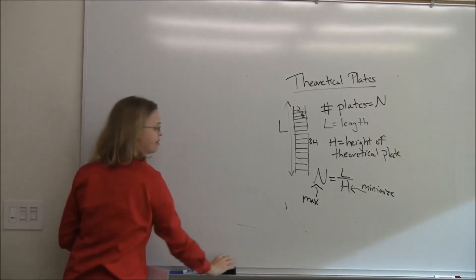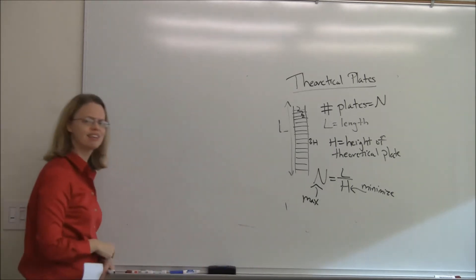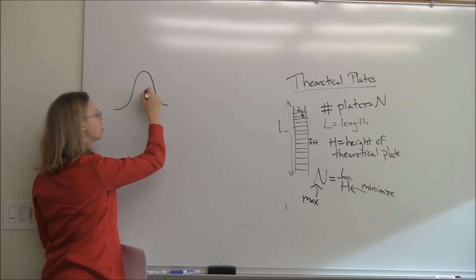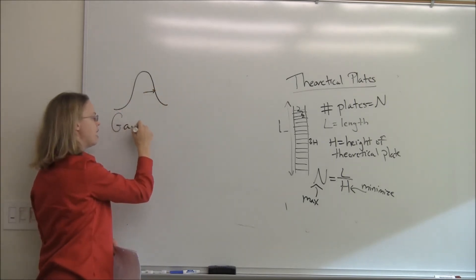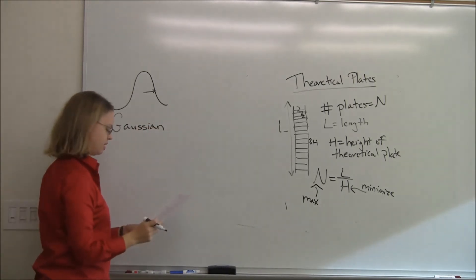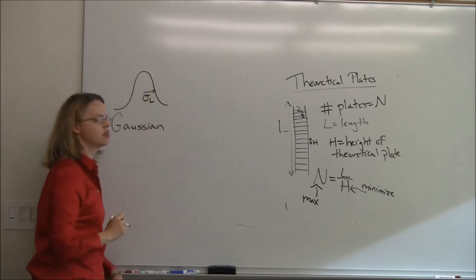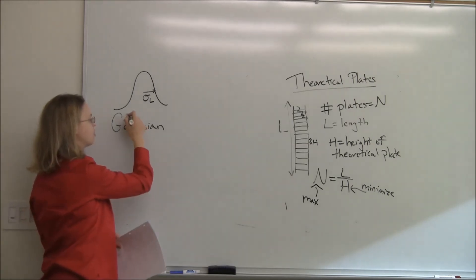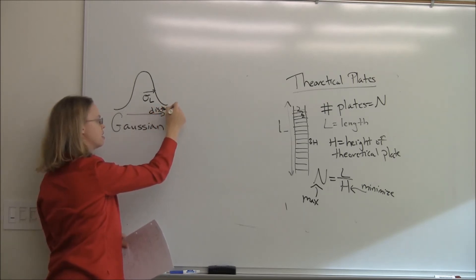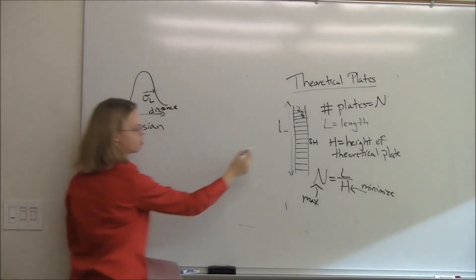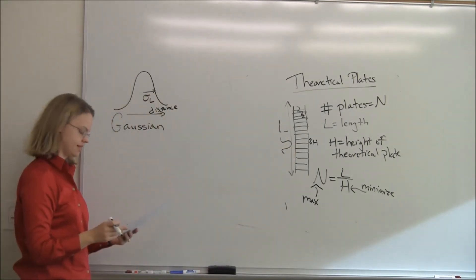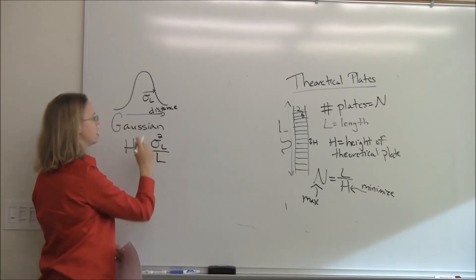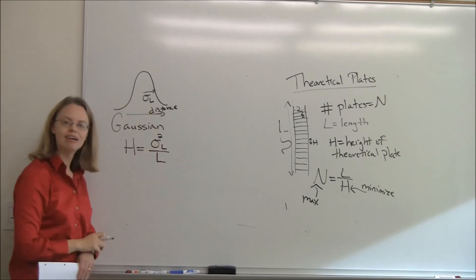How do we figure out this theoretical plate? We don't actually have a column divided up this way — it's an archaic way to think about it. But we do have a peak with some sort of width. We assume the peak is Gaussian, and from that we can extract a standard deviation sigma in distance units — a peak spread out along a column in distance. Then H is defined as sigma-squared in the distance domain divided by L. That's the theoretical plate — it relates to how wide your peak is.